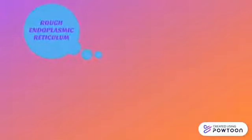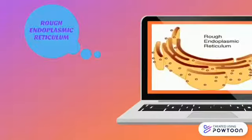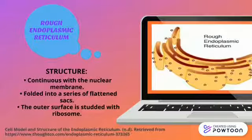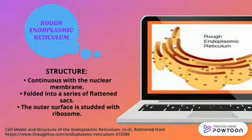Rough endoplasmic reticulum is an organelle that is continuous with the nuclear membrane and is folded into a series of flattened cisternae. It also consists of ribosomes present on the outer surface of its membranes.